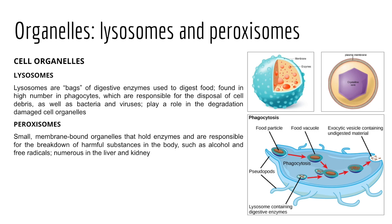We also have peroxisomes. Peroxisomes are similar to lysosomes but smaller. They contain a different variety of enzymes whose primary function is to rid the cell of toxic substances. They're responsible for oxidation reactions that break down fatty acids. Further, they help neutralize free radicals in the cell, which can cause cellular damage. In the liver, special peroxisomes are used to detoxify alcohol and other harmful compounds.